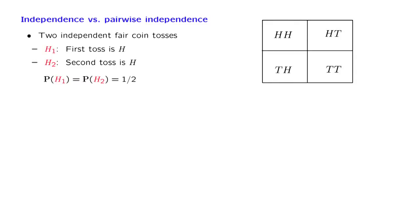We will now consider an example that illustrates the difference between the notion of independence of a collection of events and the notion of pairwise independence within that collection.